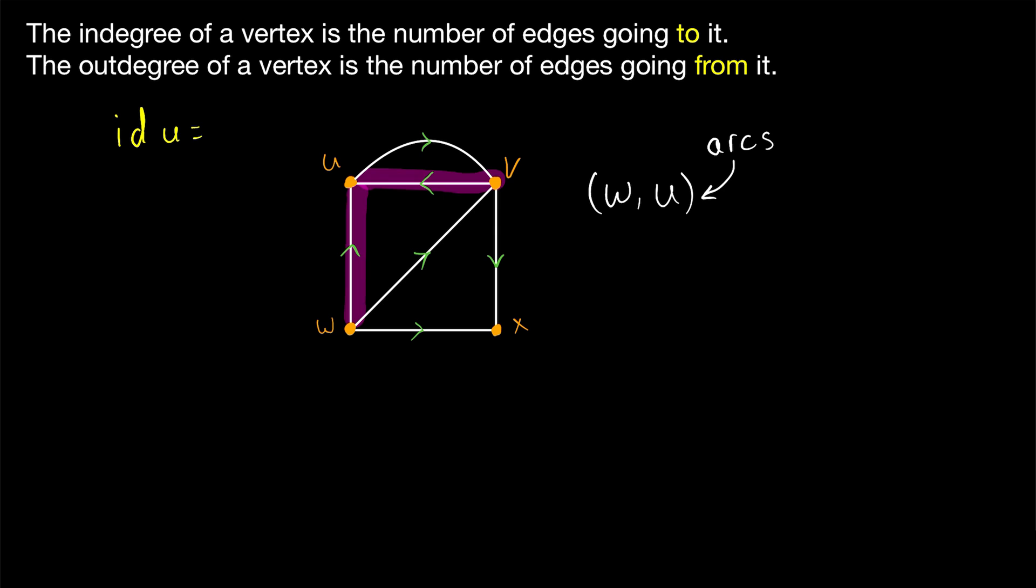There are two directed edges, or arcs, going to U. One of them is this one that we previously wrote. The other one is going to U from the vertex V. Since there are two arcs going to U, the in-degree of U is two. What about the out-degree, denoted O-D-U? How many arcs are going out of U? That would be just one. There is one arc going from U to the vertex V. Since there's one arc going out of U, the out-degree is one.